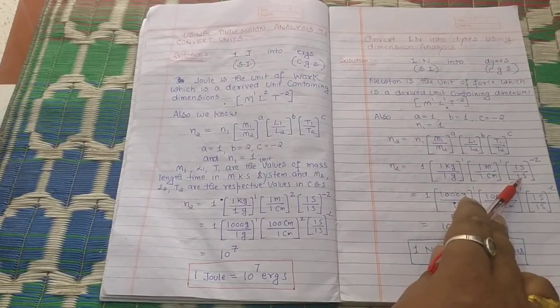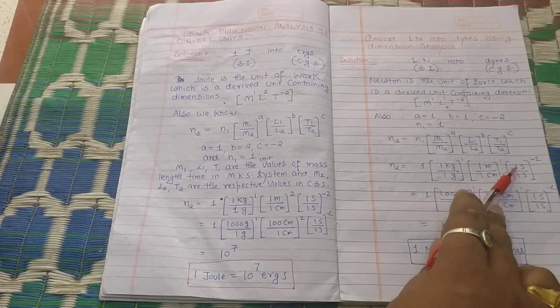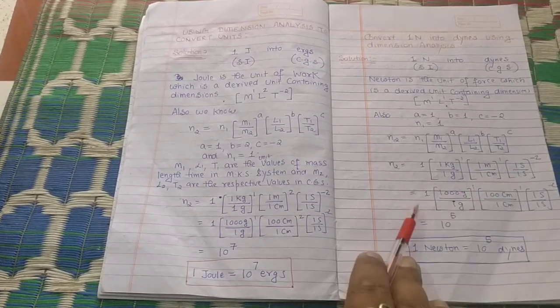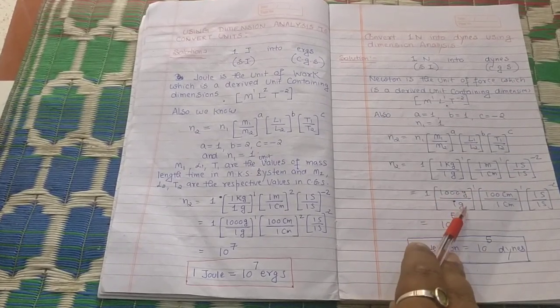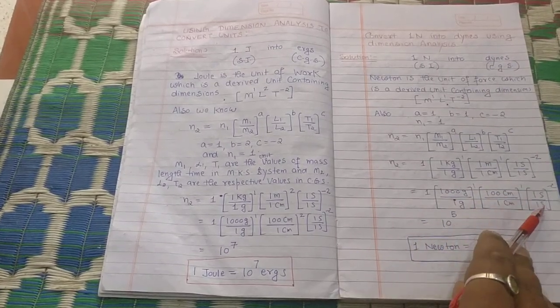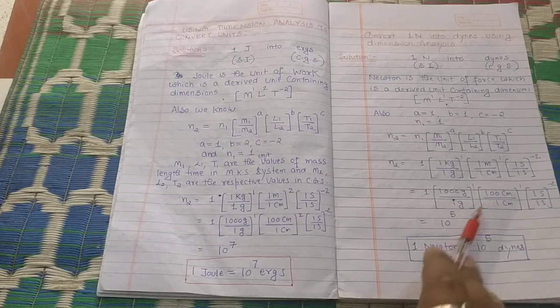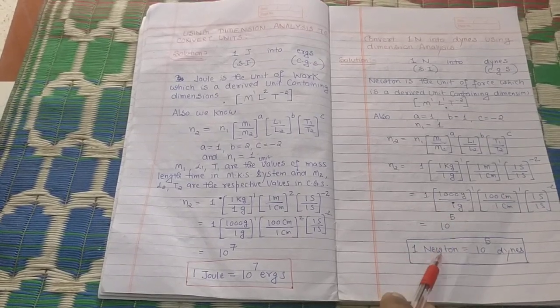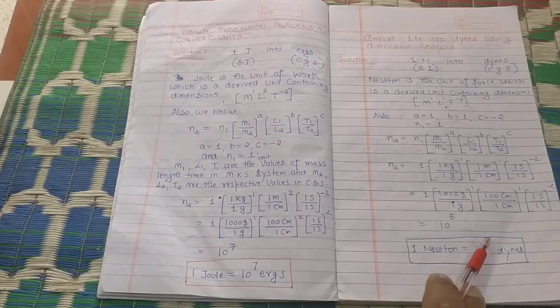In both MKS system and CGS system, the SI unit of time is second. So you will get 1 × (1000 g / 1 g)¹ × (100 / 1)¹ × (1 s / 1 s)⁻². By solving you will get 10⁵. So 1 Newton = 10⁵ dynes.